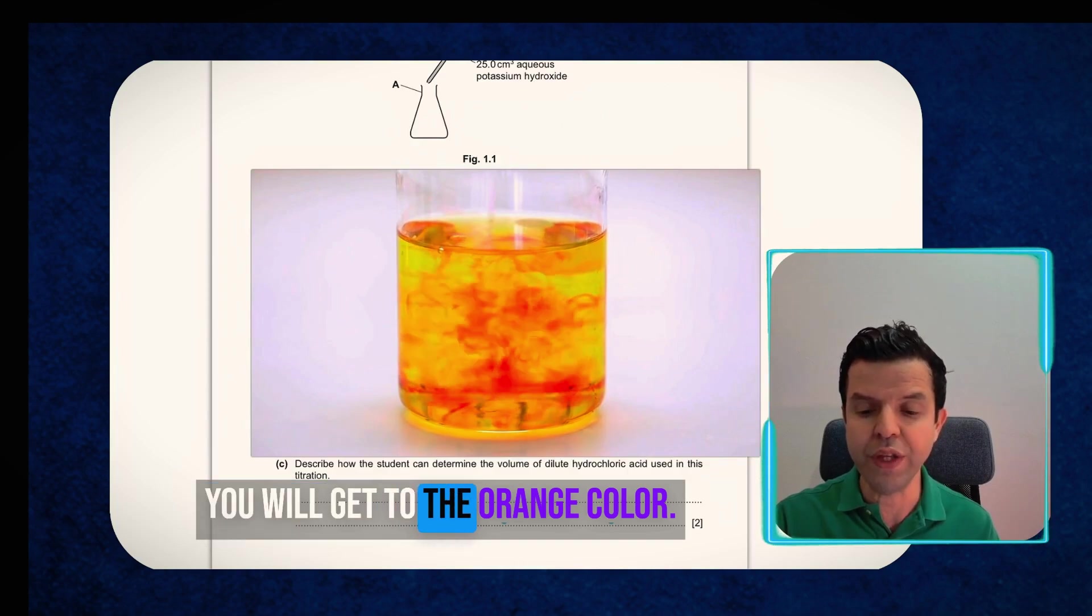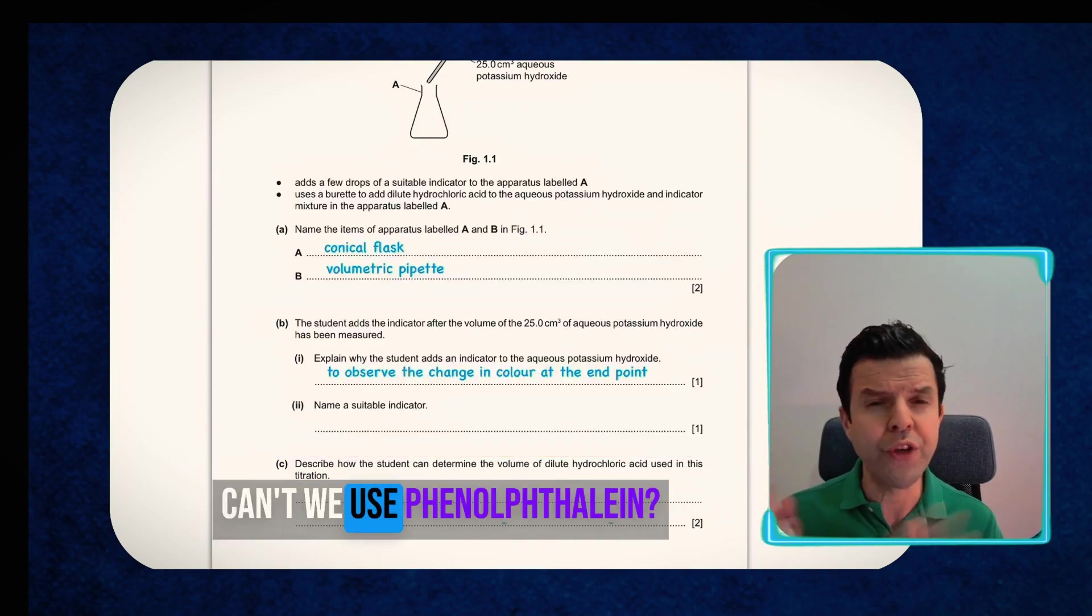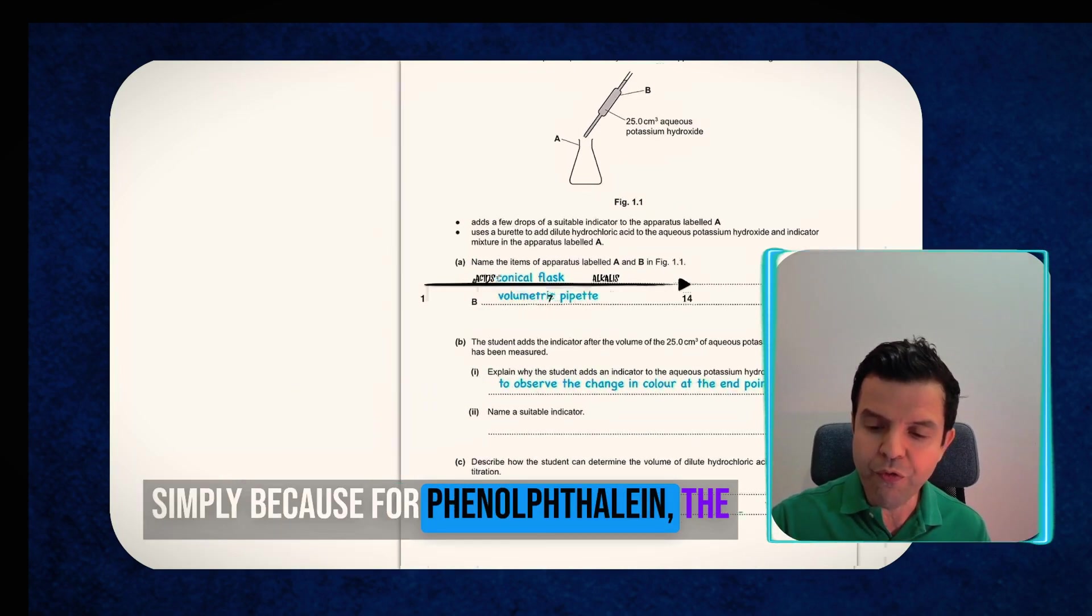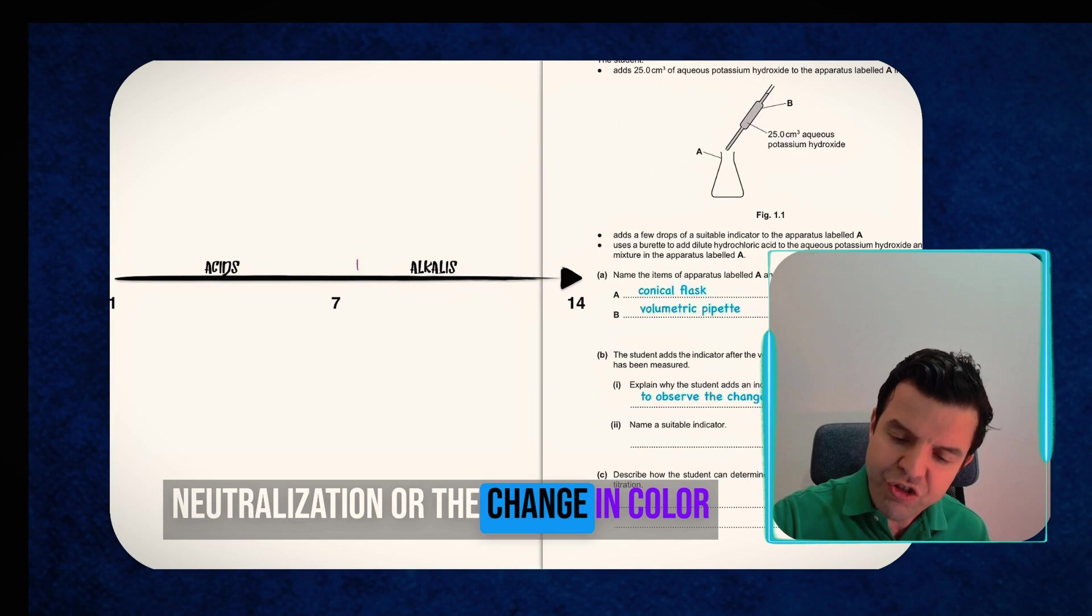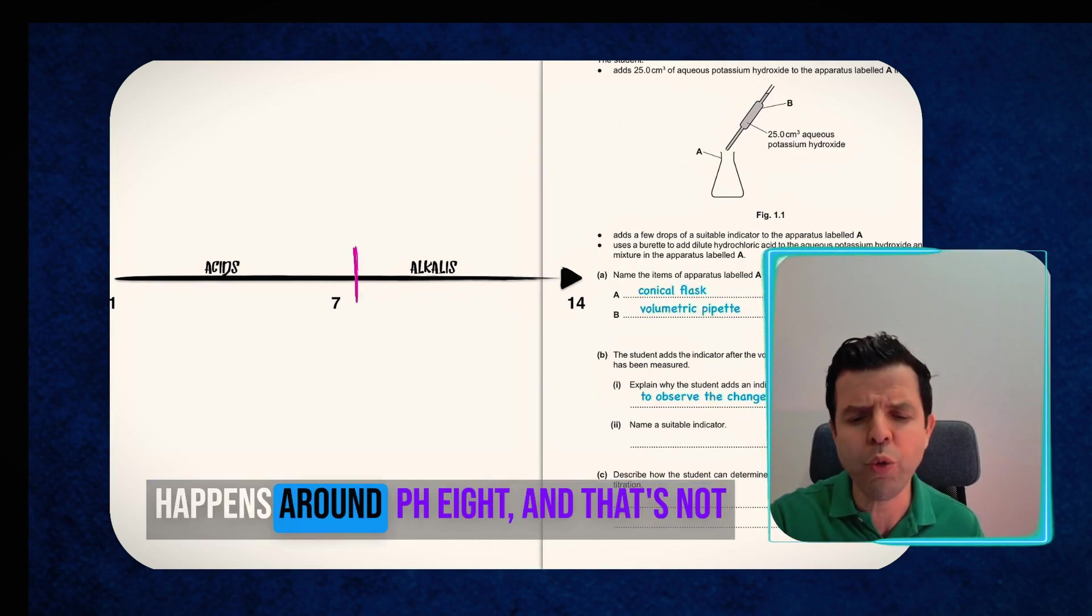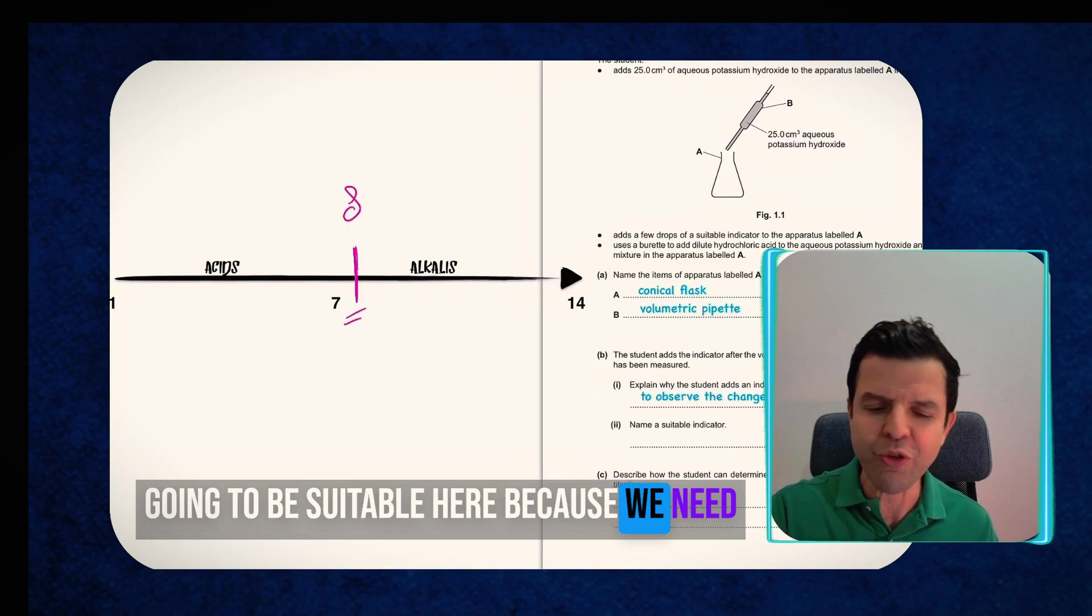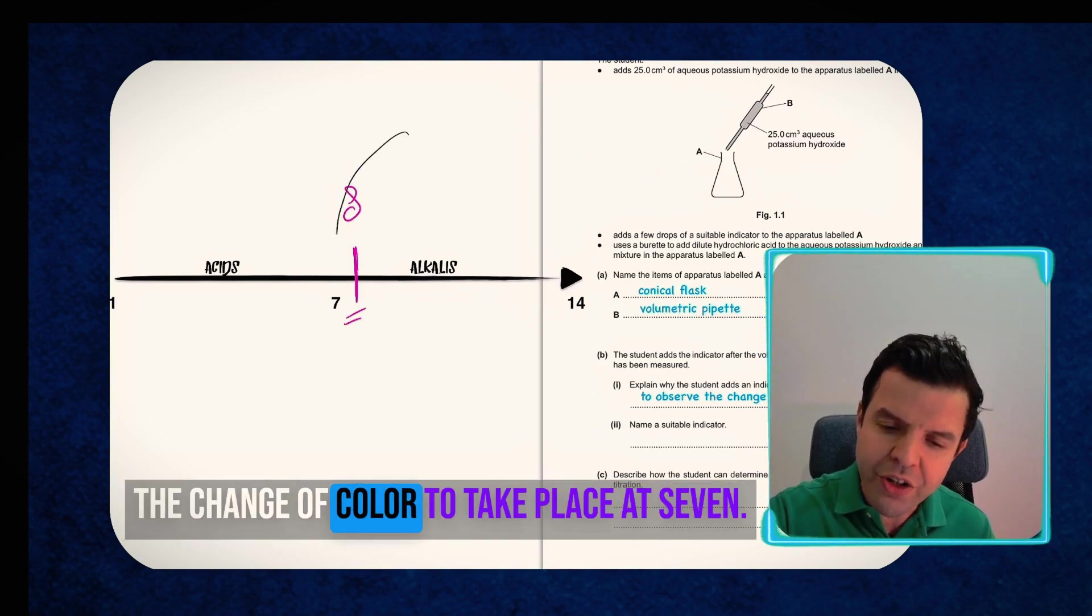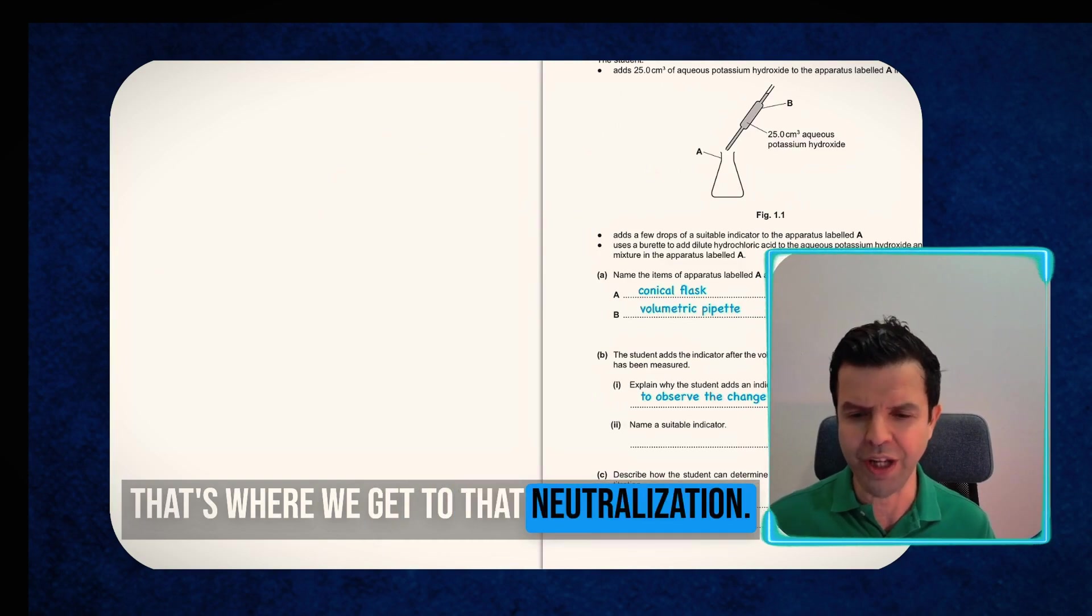You may ask me like why can't we use phenolphthalein. Simply because for phenolphthalein the neutralization or the change in color happens around pH 8 and that's not going to be suitable here because we need that change of color to take place at 7. That's where we get to that neutralization. That's why I'm going to mention methyl orange or thymolphthalein.